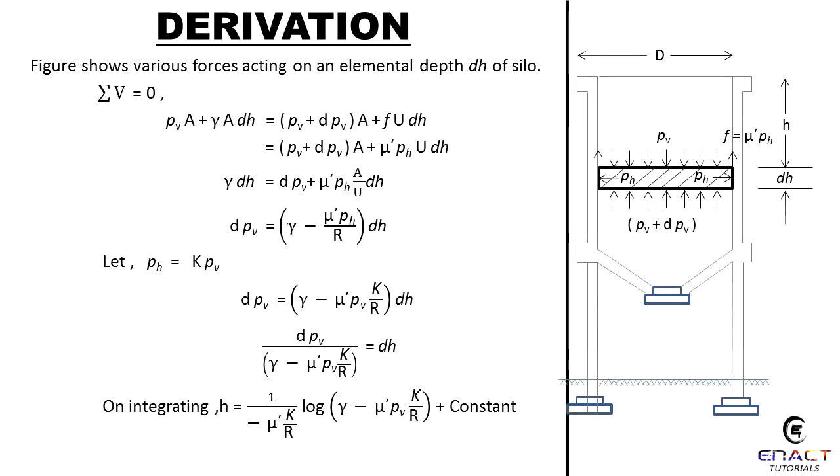The figure shows various forces acting on an elemental depth dh of silo. ΣV = 0: pV·A + γAdh = (pV + dpV)A + fUdh = (pV + dpV)A + μ'pH·Udh. γdh = dpV + μ'pH(A/U)dh.